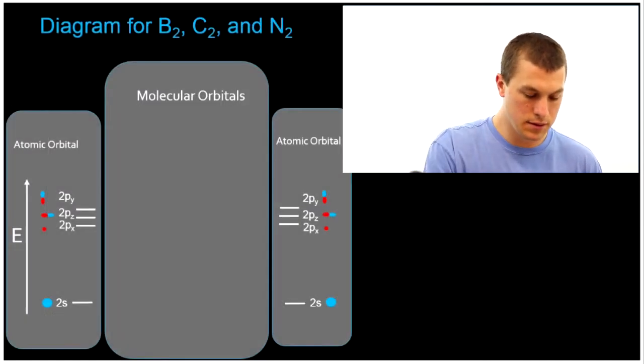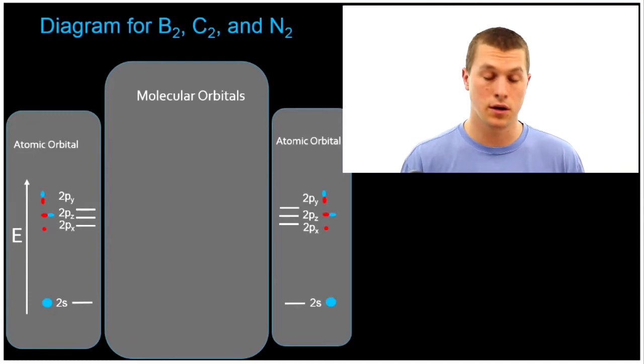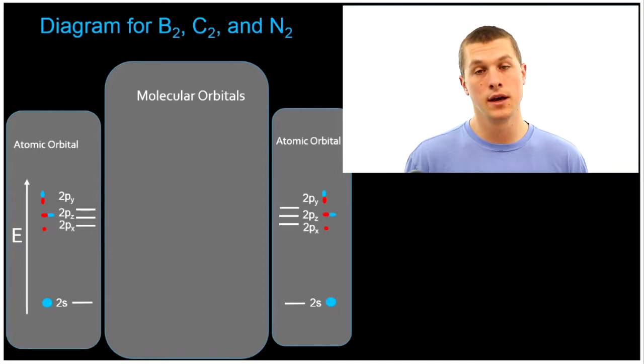So here, we're going to build up the diagram that's correct for boron, carbon, and nitrogen. It turns out oxygen and fluorine's diagram is slightly different, and I'll show you what that looks like towards the end of this video, so stick with us.